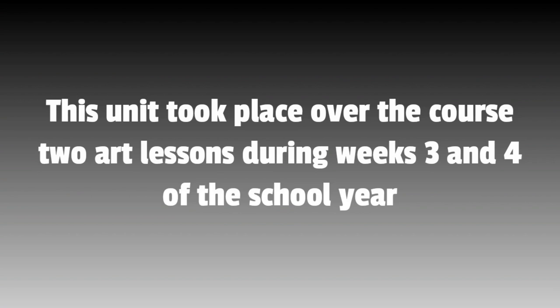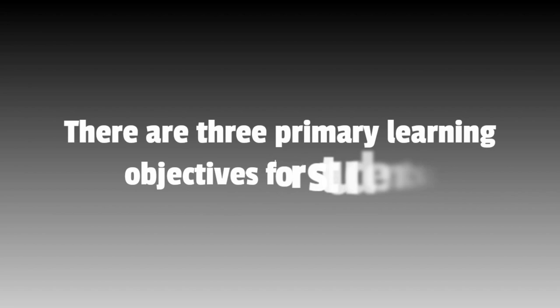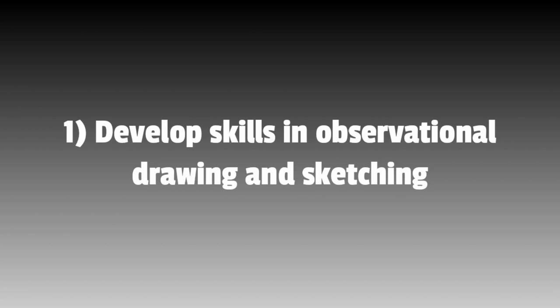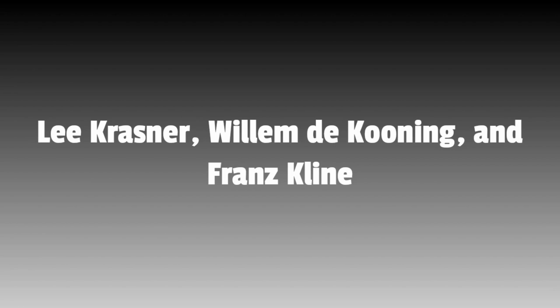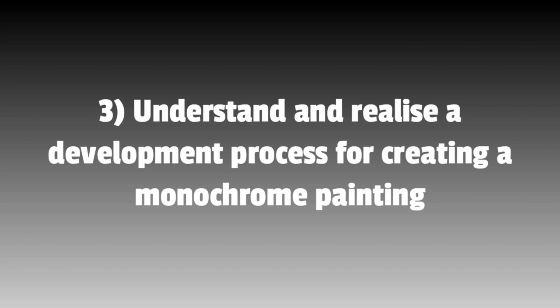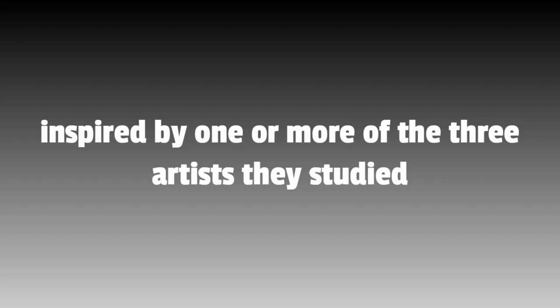There are three primary learning objectives for students. One, develop skills in observational drawing and sketching. Two, develop experience with the artist model learning method by studying black and white paintings by three American abstract expressionist artists: Lee Krasner, Willem de Kooning and Franz Klein. Three, understand and realize a development process for creating a monochrome painting by working up one of their own sketches inspired by one or more of the three artists they studied.